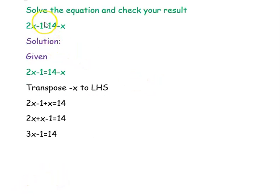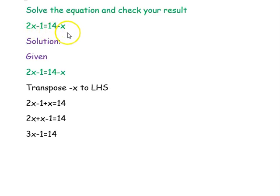Next question: solve the equation and check your result. The equation is 2x minus 1 equal to 14 minus x. We are writing the equation: 2x minus 1 equal to 14 minus x.